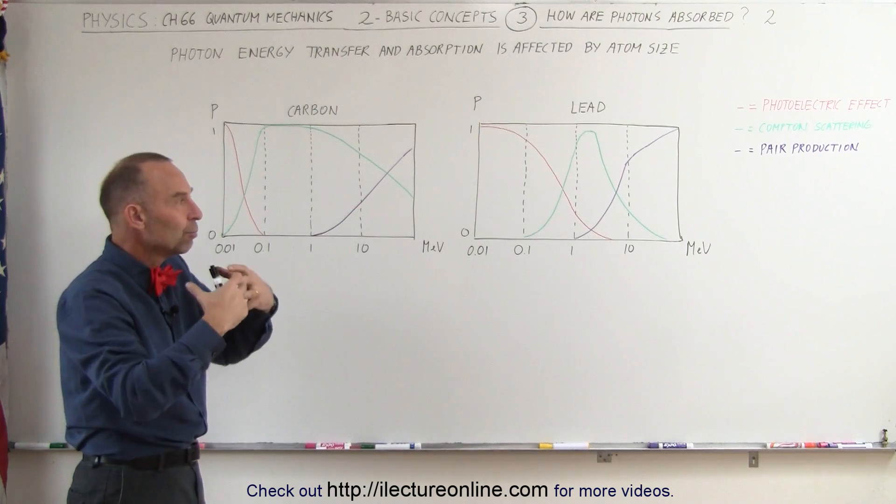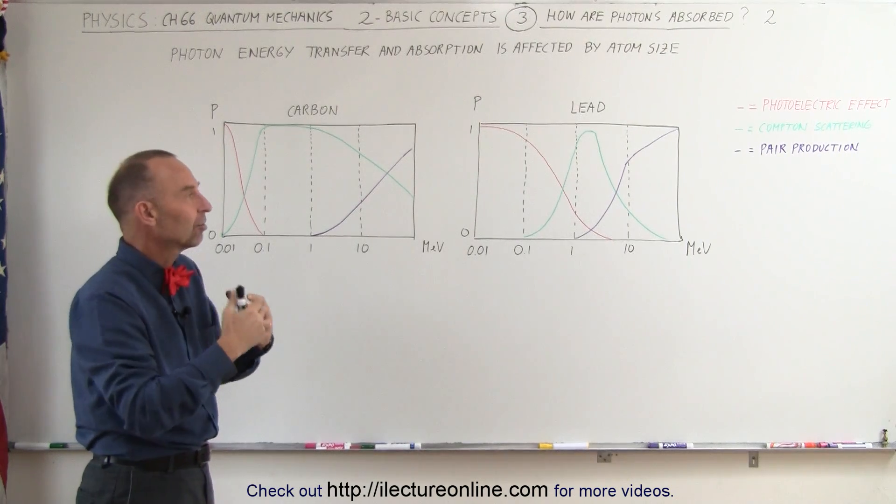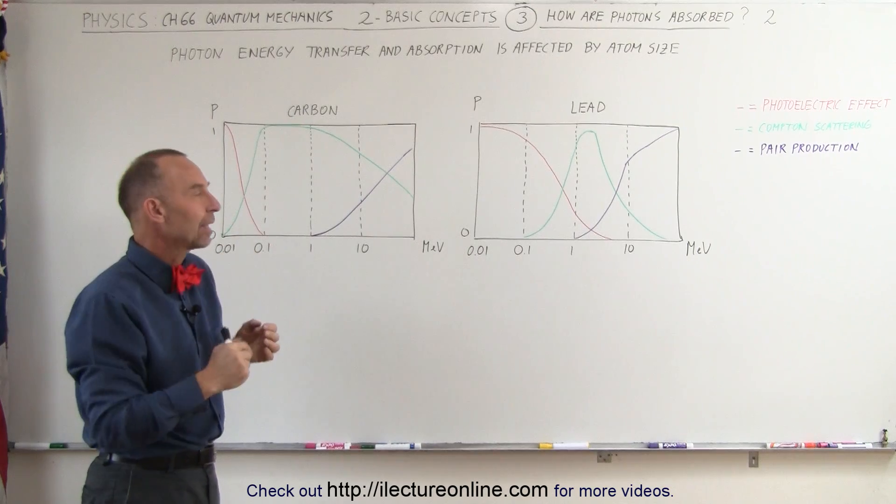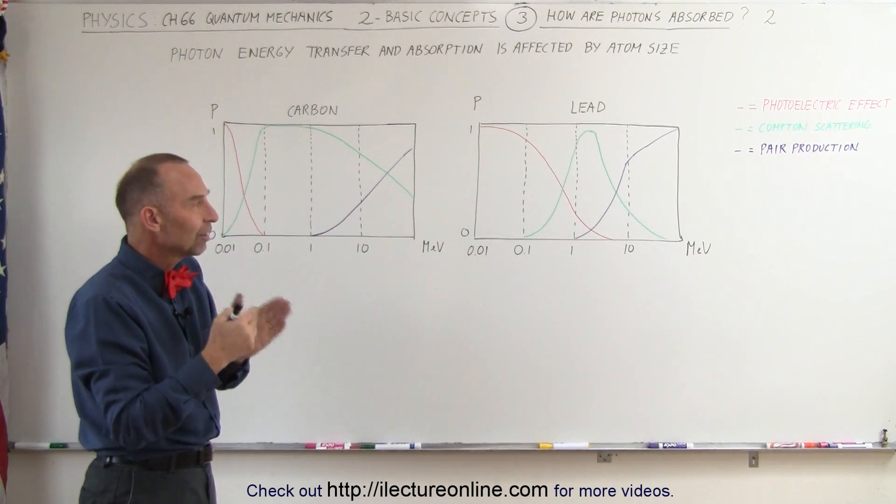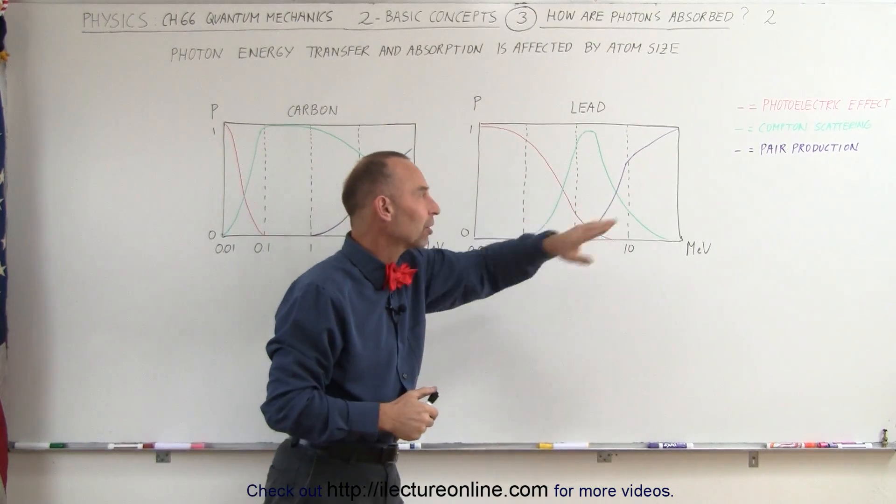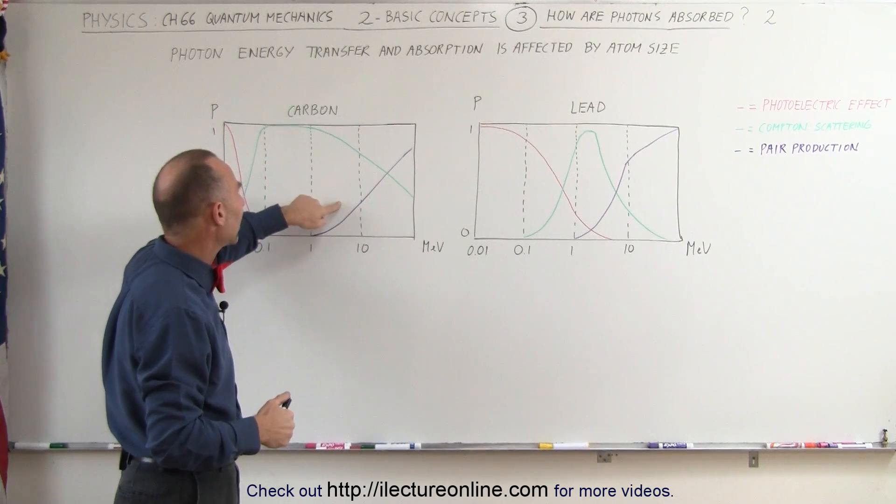The large nuclei provide much more of an interaction mass for the photons so that they can be accelerated at greater accelerations, therefore causing much more of a pair production event than for smaller atoms such as carbon.